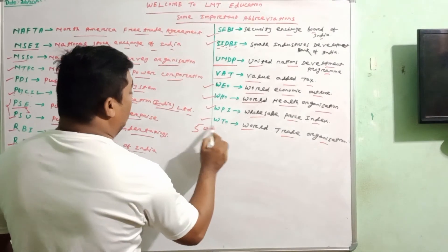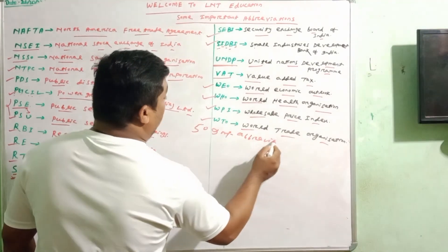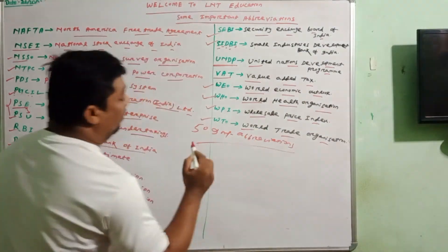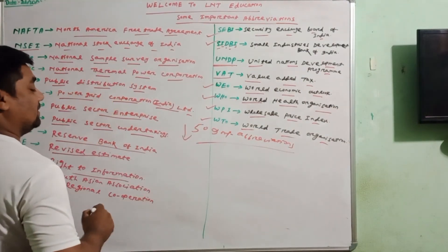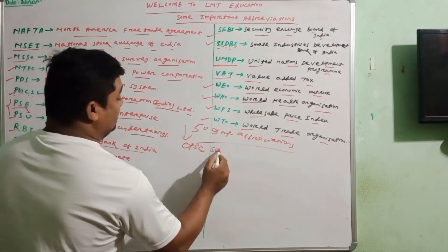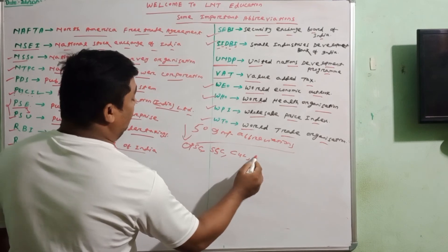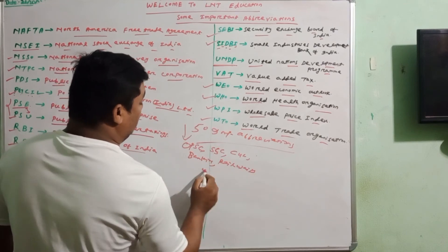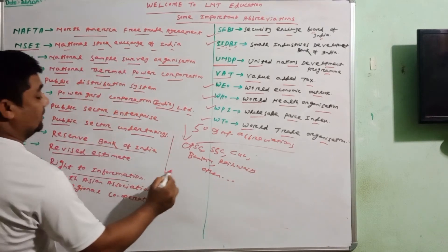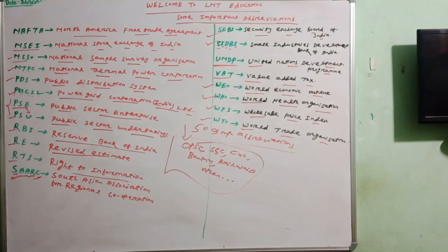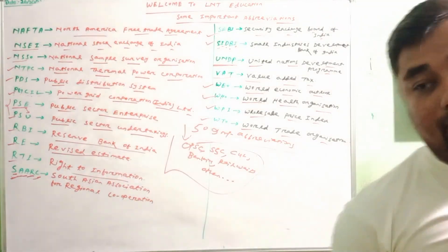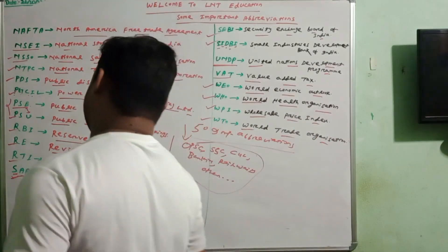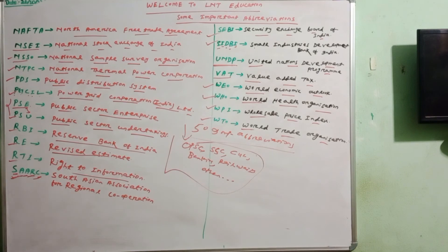So these are 50 important abbreviations that we have discussed. These are very important for your upcoming examinations — OPSC, SSC CGL, banking, railway, and other competitive examinations. One or two questions may come from these. The abbreviation will be given and you have to write its expanded form.